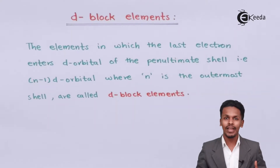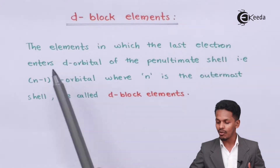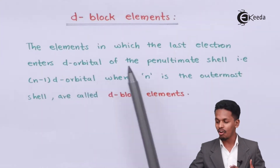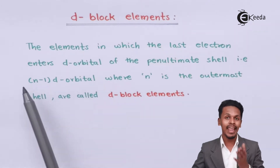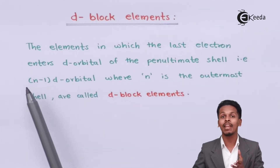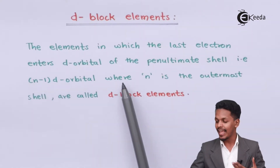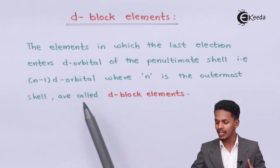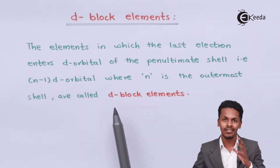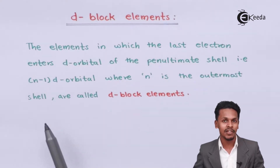Talking about the D block elements: these are the elements in which the last electron enters in the d orbital of the penultimate shell, that is the (n-1)d orbital, where n is known as the ultimate shell and n-1 is known as the penultimate shell. Those elements in which the last electron enters in the (n-1)d orbital are known as D block elements.